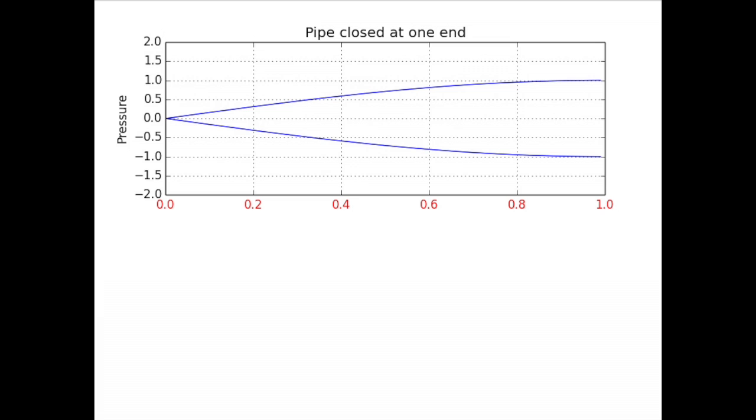On a pipe organ, the bass pipes are closed at one end. Closing one end not only lowers the fundamental frequency but also changes the pattern of overtones.